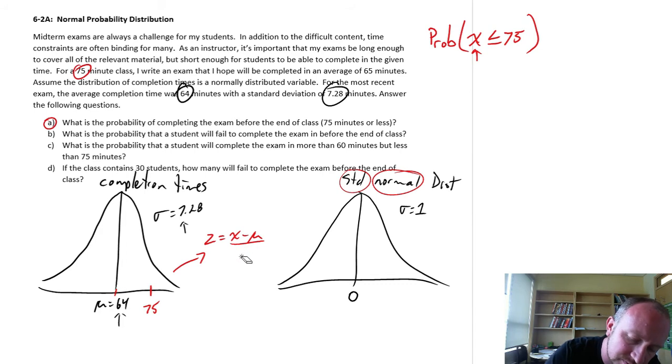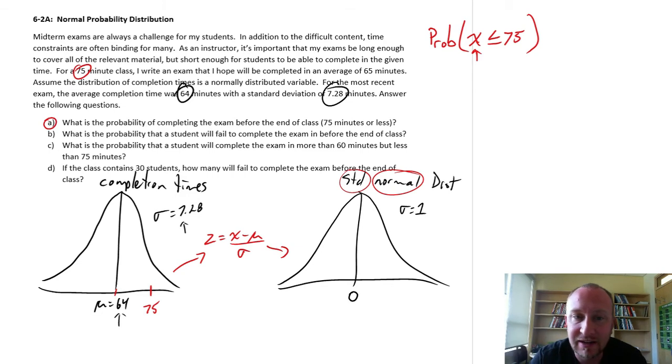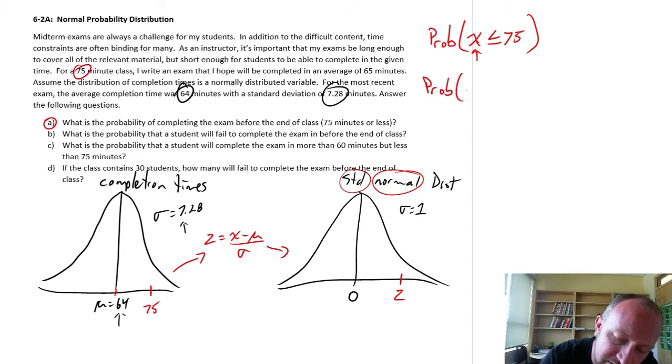We need to convert this through this fairly simple formula. Convert that into what we call a z-score, which is going to be somewhere up here. There's a z-value. Convert my value of interest from my distribution of observations. Convert that into a z-score. And now I can look up the probability of obtaining a z-value from the standard normal distribution less than or equal to whatever is that specific value.